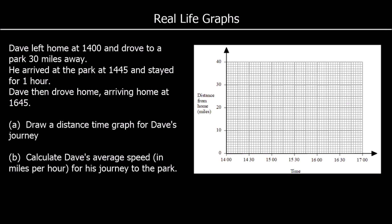And a distance-time graph. Dave left home at 2 o'clock — 1400 — and drove to a park 30 miles away. He arrived at 14:45, so at 14:45 he was 30 miles away from home. He stayed for one hour, so he stayed 30 miles away until 15:45. Then he drove home, arriving home at 16:45, so he'll be zero miles away at 16:45. Let's connect these points and that will be our distance-time graph.